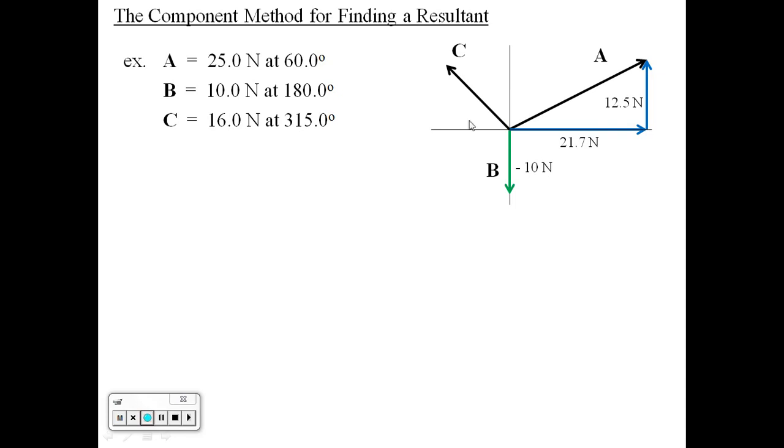Now let's deal with vector C. Vector C, we can break it into components, C sub X and C sub Y. And the angle here is the difference between 315 and 270, which is 45.